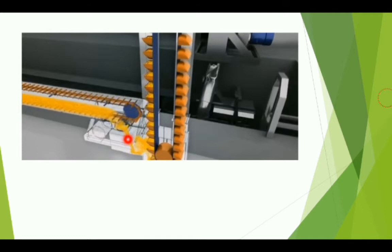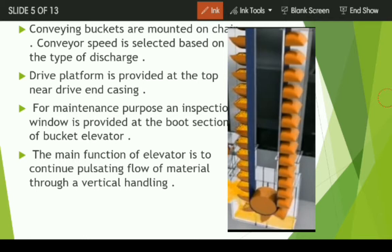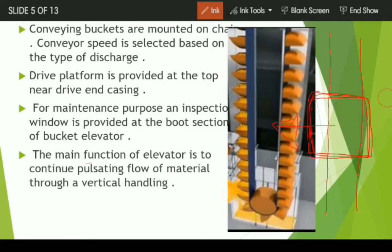You can see in this image of a processing plant — this is the belt conveyor, which is used for horizontal movement of material, and this is the bucket elevator, which is used for vertical movement of material. The wheat grain comes from the belt conveyor here. For maintenance purposes, an inspection window is provided at the boot section of the bucket elevator, even though it is an enclosed portion.